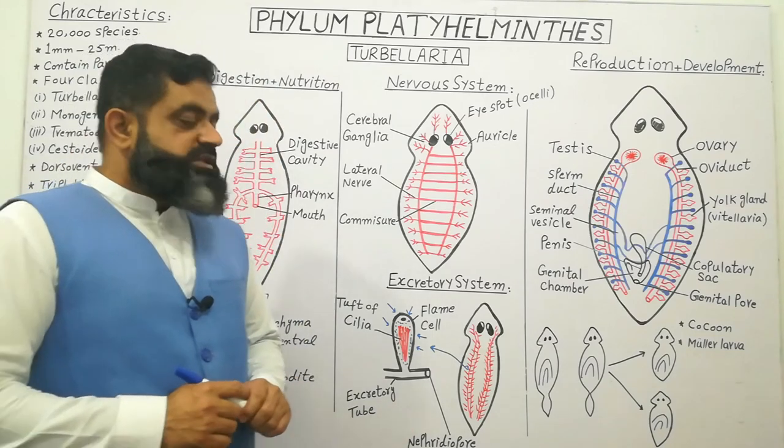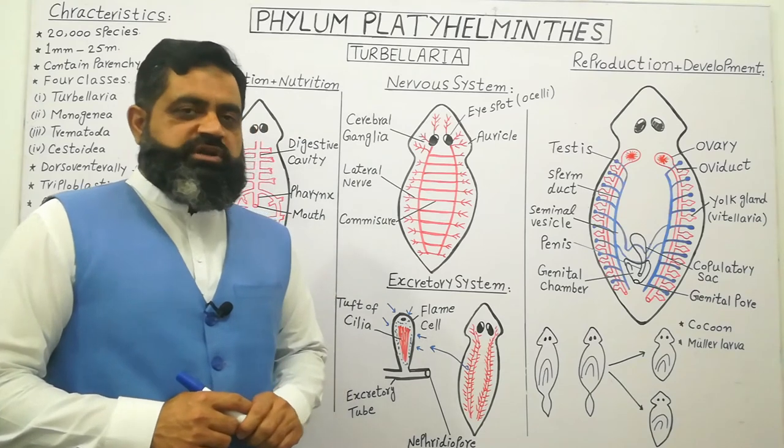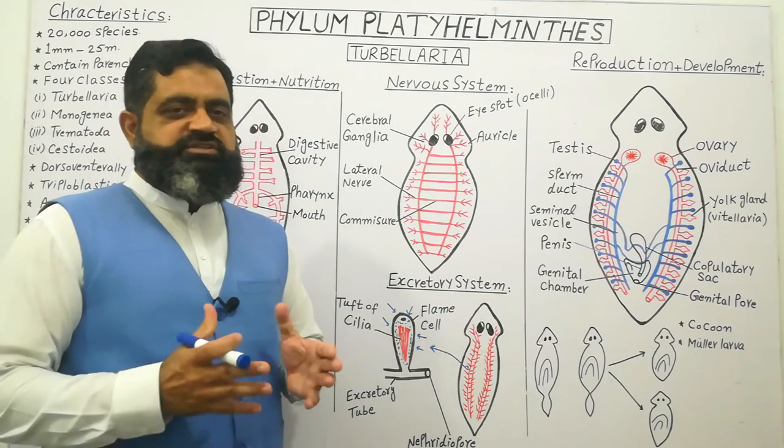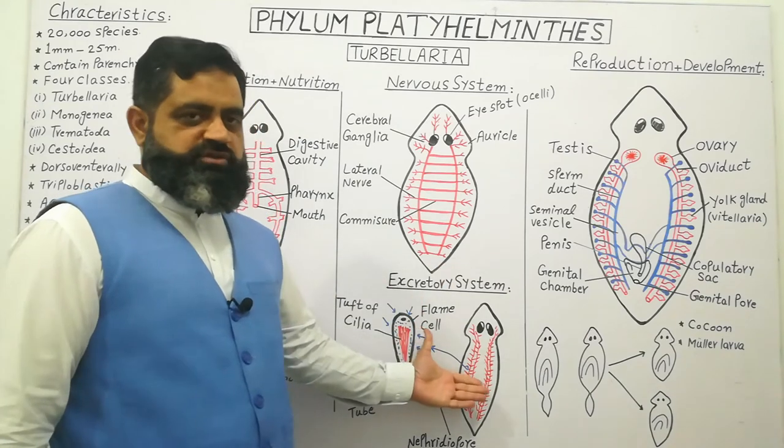These animals do not have a respiratory or circulatory system. Gaseous exchange takes place through the general body surface.